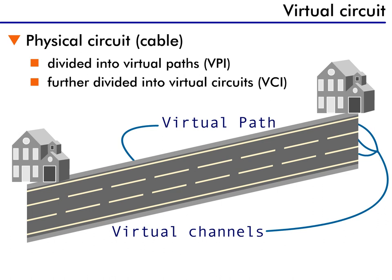When ATM establishes a connection across the network, each connection between computers, switches, and other switches is identified. This way, a path across the network can be defined as a switch-to-switch connection. Once again, this is just like following a set of directions to get to grandma's house.